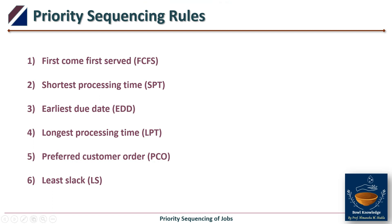Rule five is Preferred Customer Order, where jobs are processed as per specific customer requirements. Rule six is Least Slack, another priority sequencing rule. We will now explore these rules through an industrial case study.